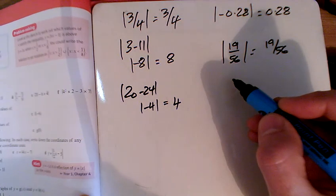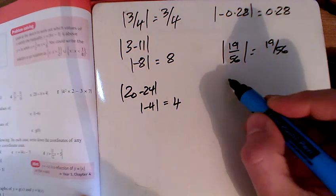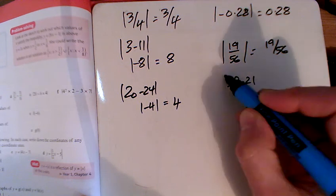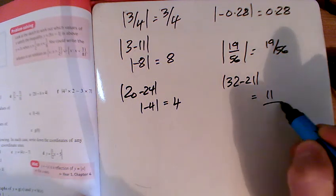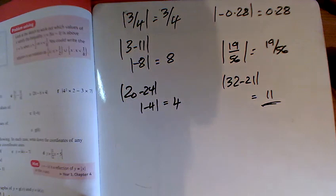again, a bit more BIDMAS there, I've got 16 times 2 is 32, take away the 21, that gives 11, and the modulus of 11 is 11.